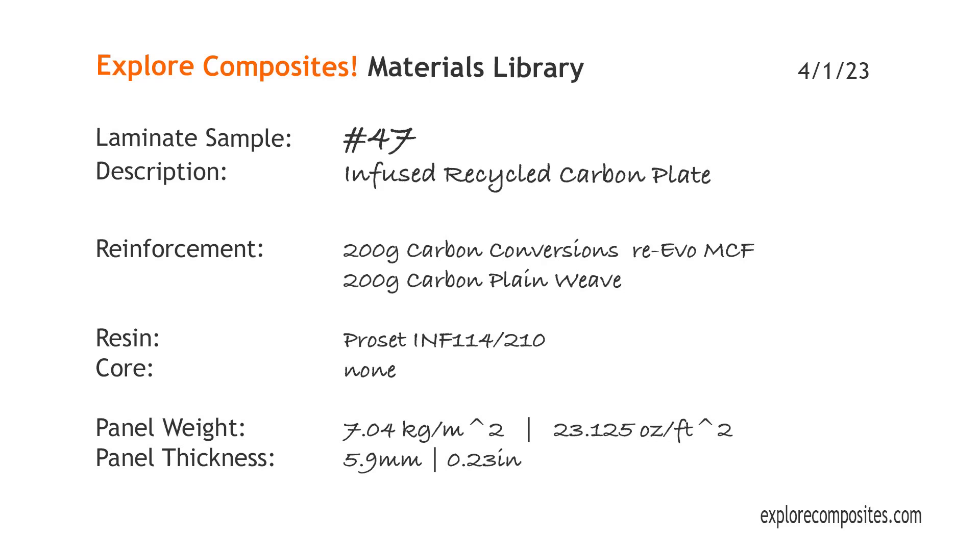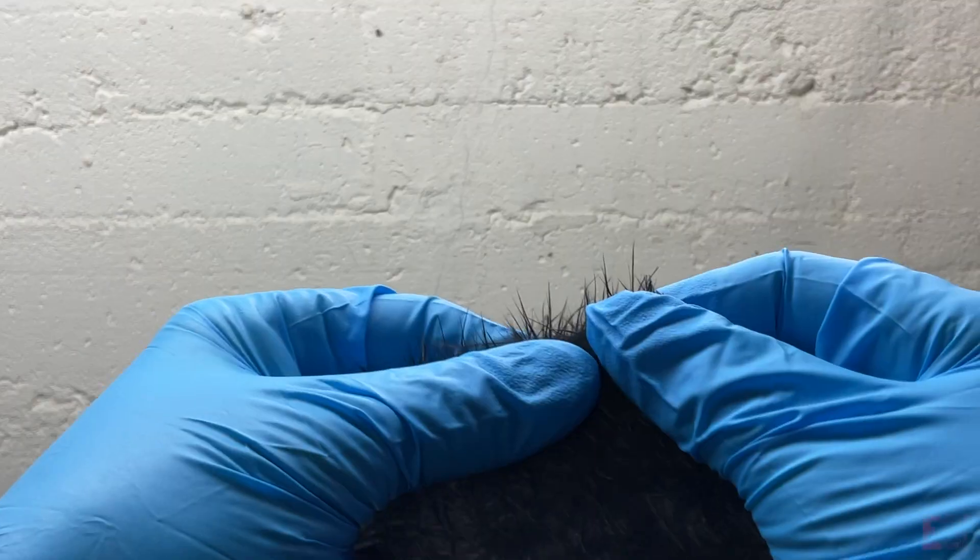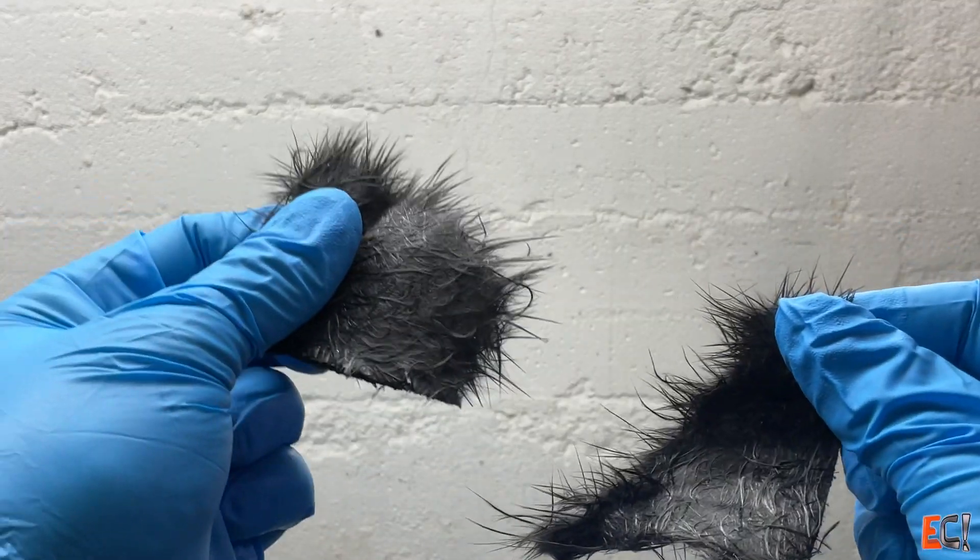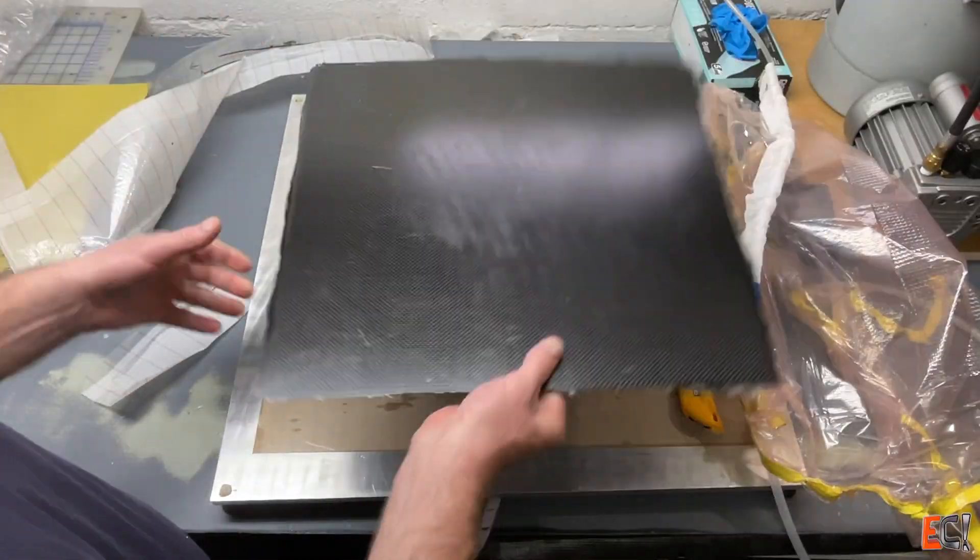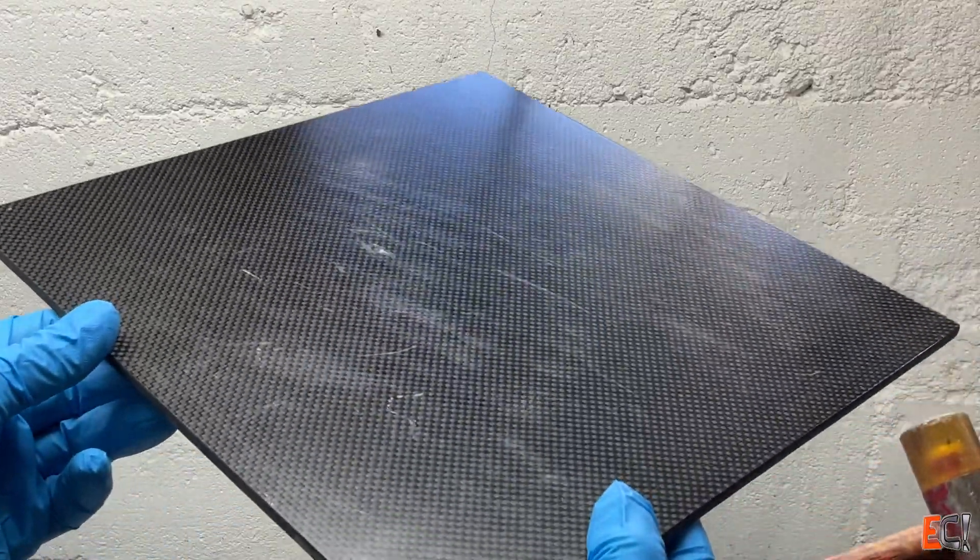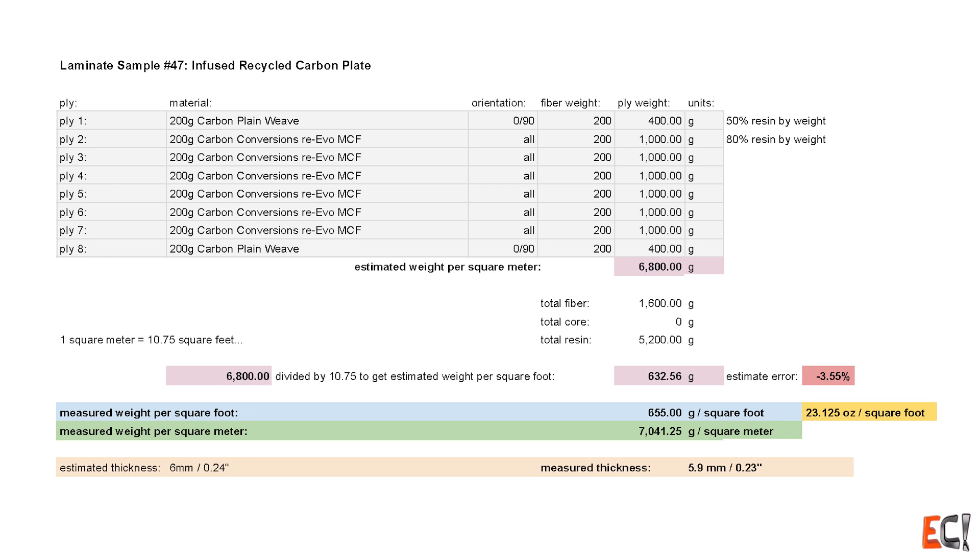Welcome to the Explore Composites materials library. This is laminate sample 47 and this one is all about recycled carbon fiber. This is a Carbon Conversions 200 gram recycled material and it's pretty neat stuff. This is a look at how you might use it for tooling.